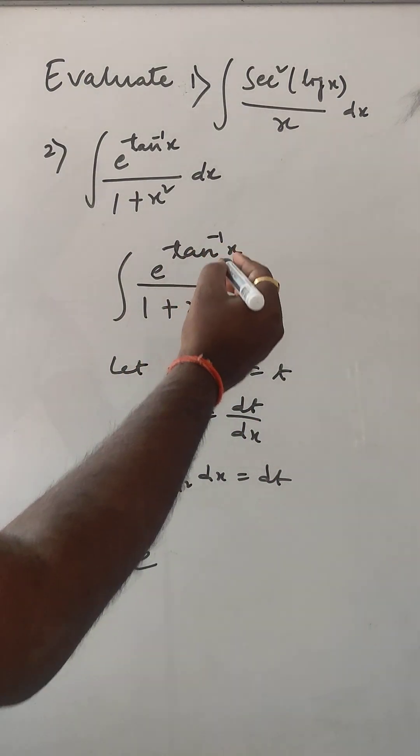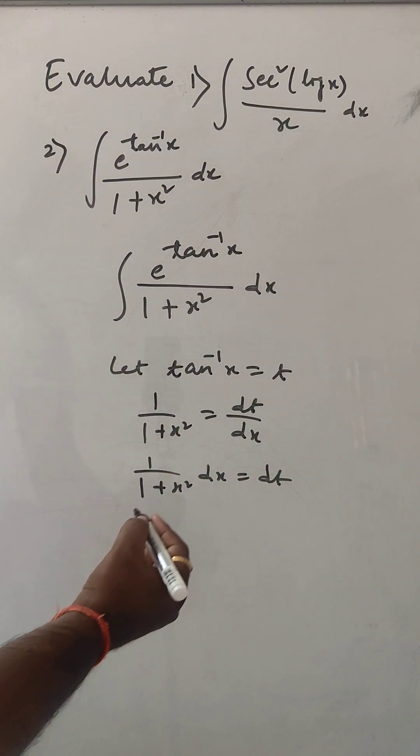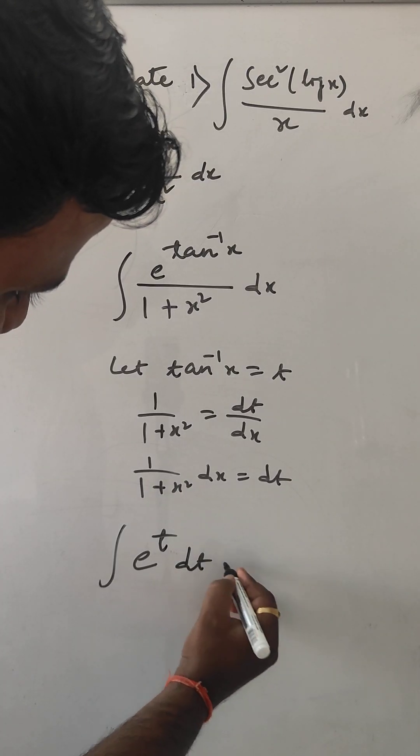So e to the power tan inverse - in place of tan inverse we can put t. And this is dt.